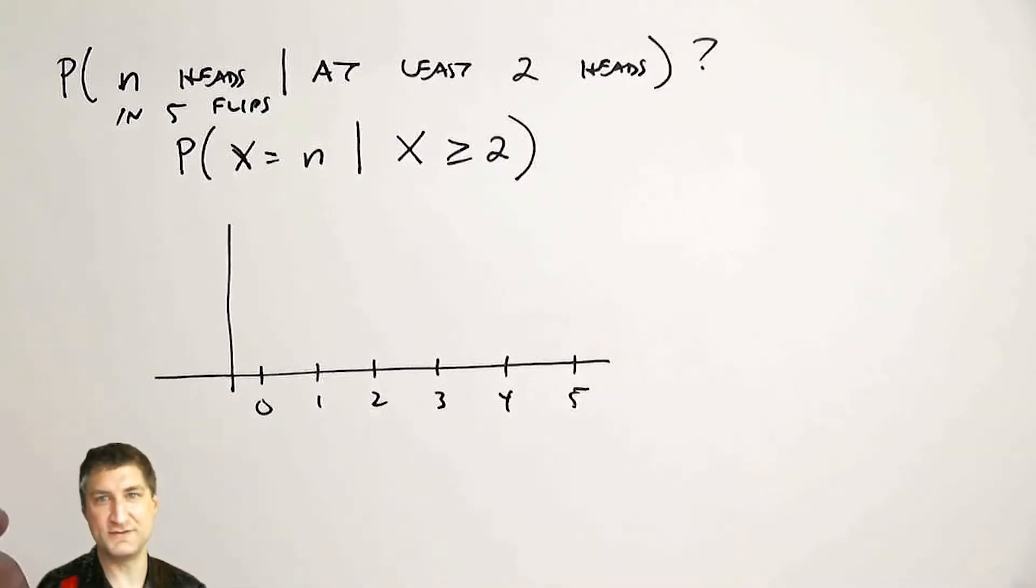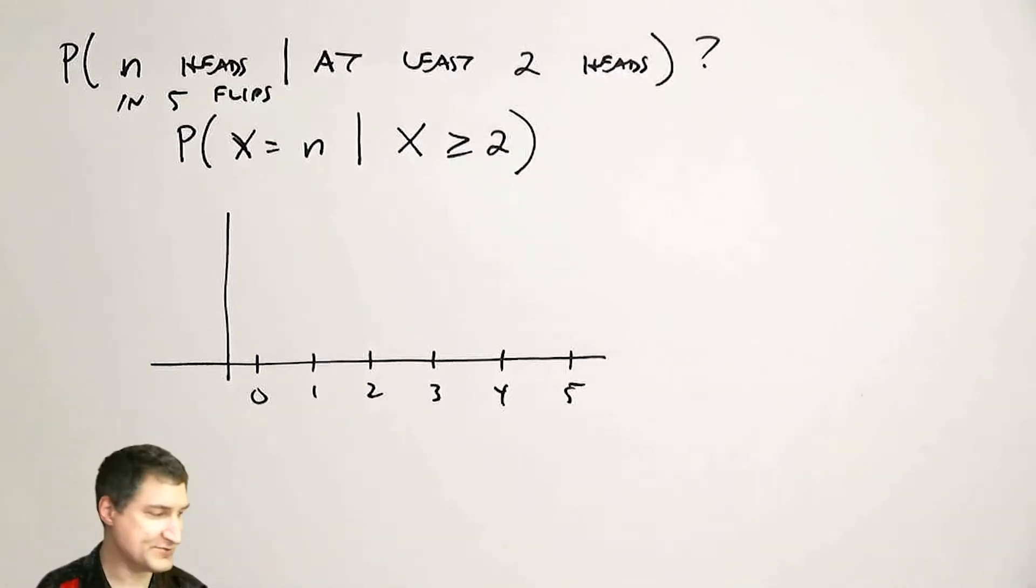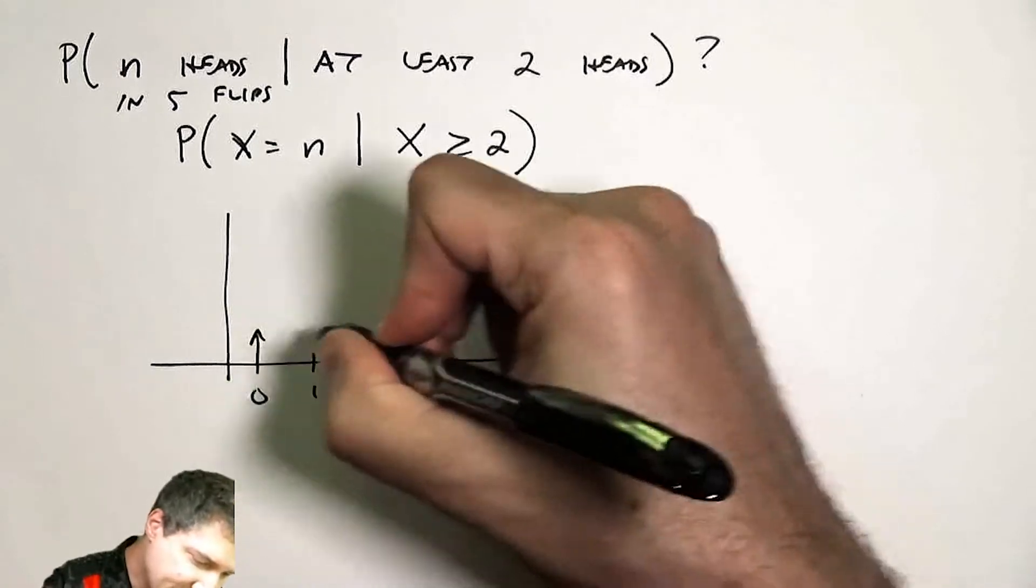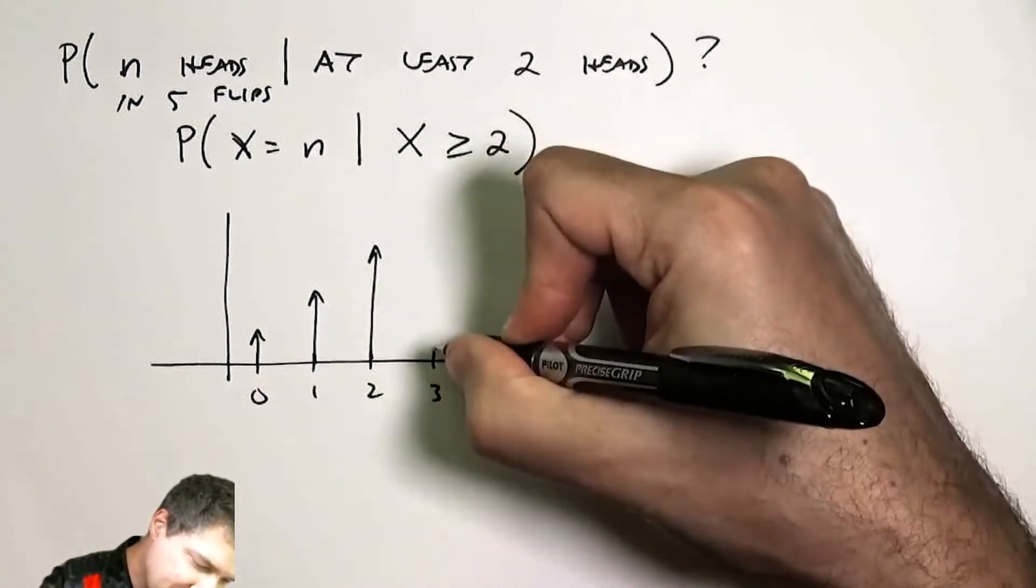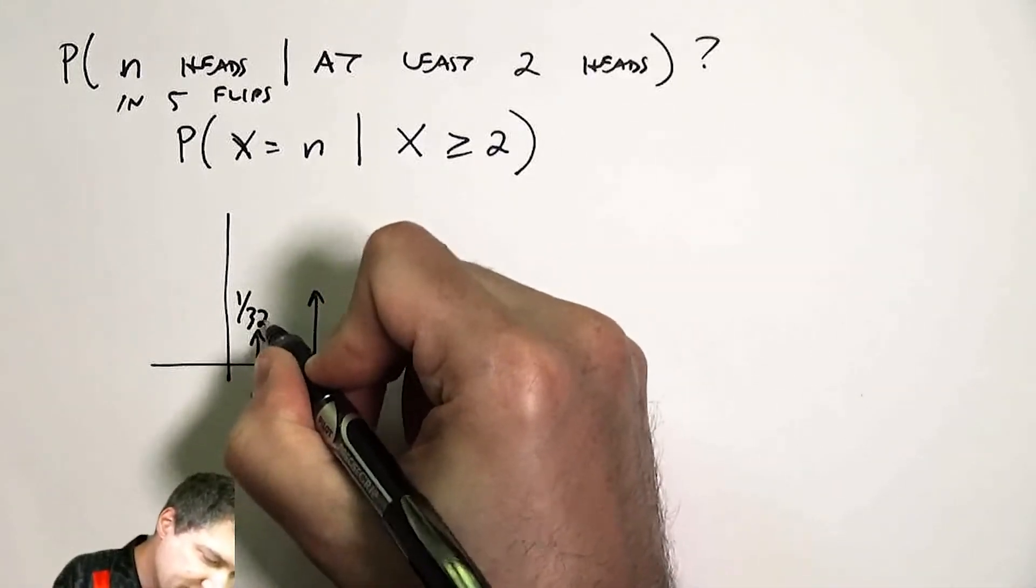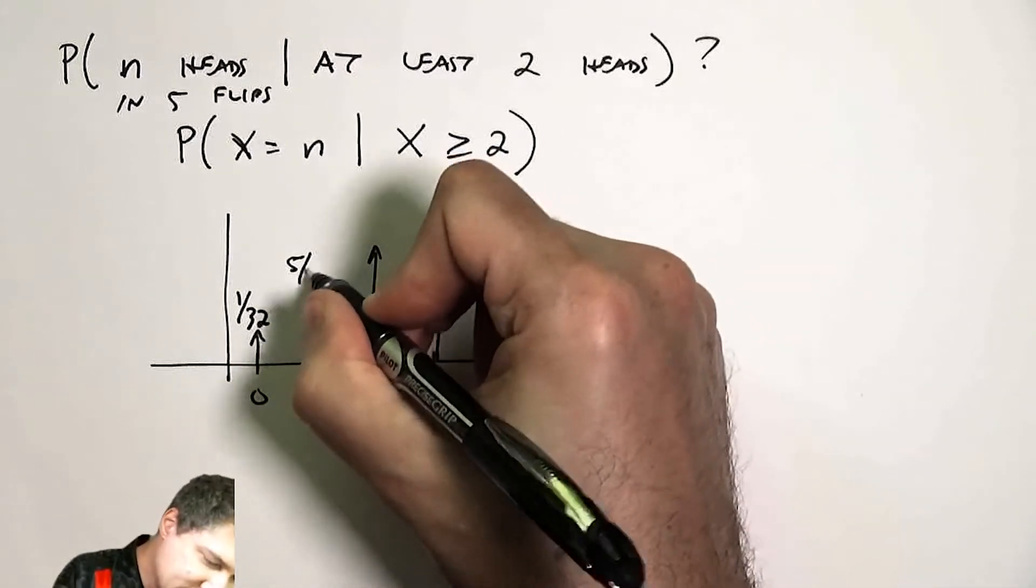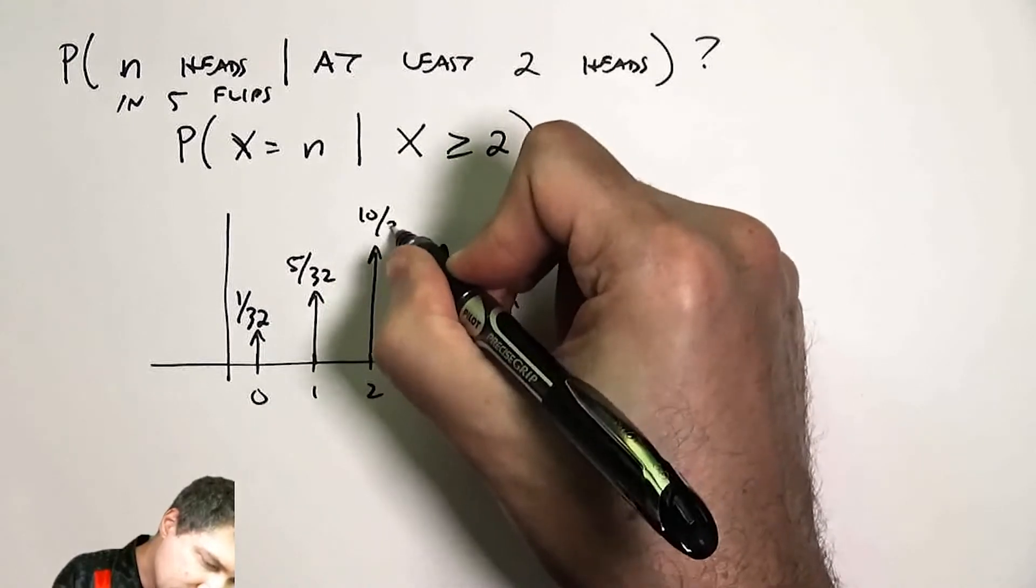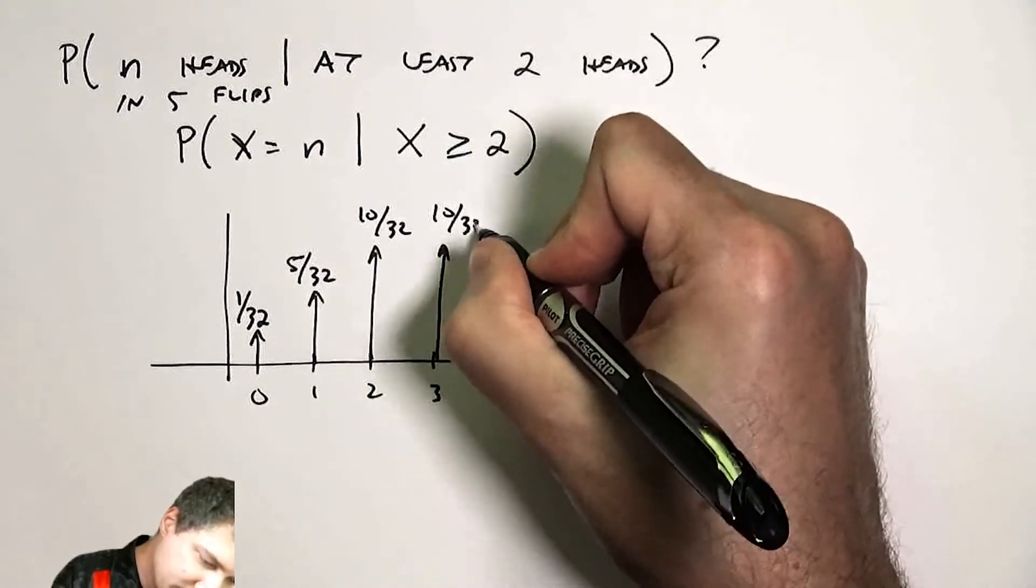And assuming this is a fair coin, this is a binomial distribution. So I have a PMF that looks something like this. And what are the heights of these arrows? You can figure it out that these are the binomial probabilities.